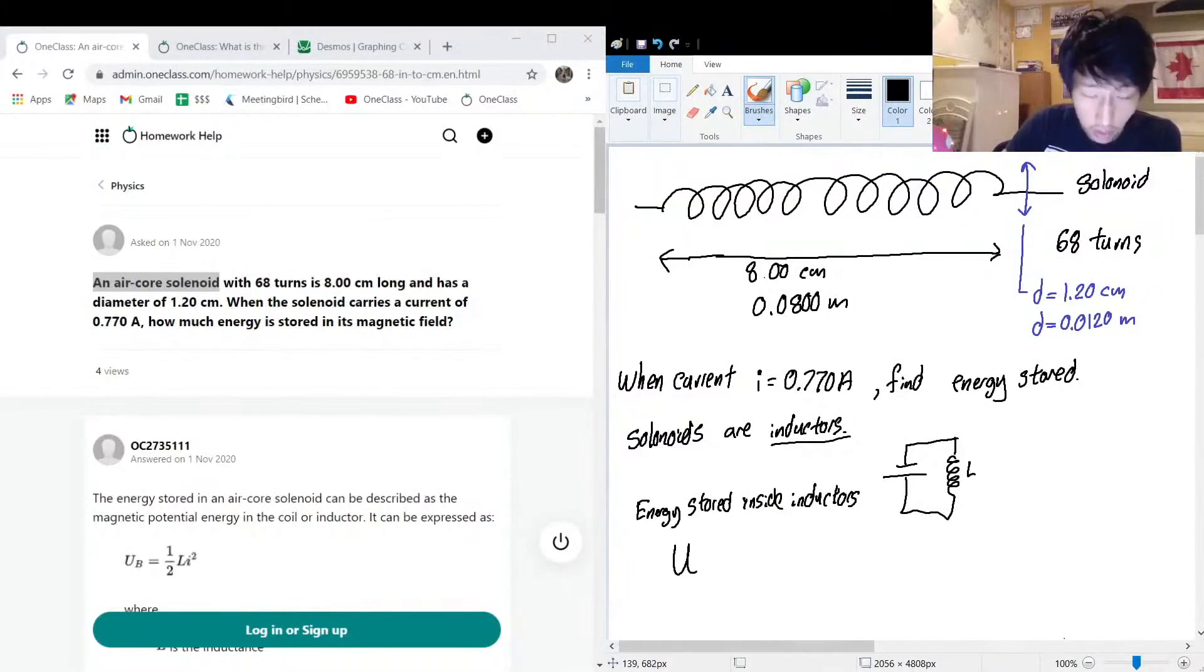We have U. U is typically used to represent potential energy. A nice way is like, you know, po-tential, pu-tential, you gotta do what you gotta do to remember this stuff. It is one-half inductance L multiplied by current squared. You see how it kind of has a similar structure to kinetic energy. It also looks similar to spring potential energy. It's very fascinating stuff that everything looks so similar. So we have the I value here because the I is 0.770 amps, but we need to find the L.